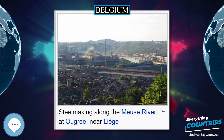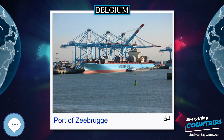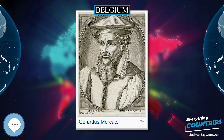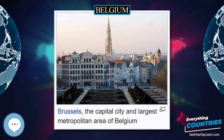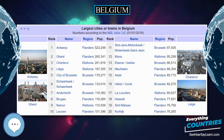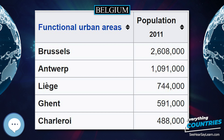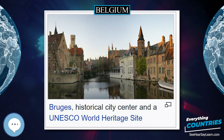The country emerged in 1830 following the Belgian Revolution when it seceded from the Netherlands. Belgium participated in the Industrial Revolution and, during the course of the 20th century, possessed a number of colonies in Africa. The second half of the 20th century was marked by rising tensions between the Dutch-speaking and French-speaking citizens, fueled by differences in language, culture, and the unequal economic development of Flanders and Wallonia. This continuing antagonism led to several far-reaching reforms, resulting in a transition from a unitary to a federal arrangement from 1970 to 1993.